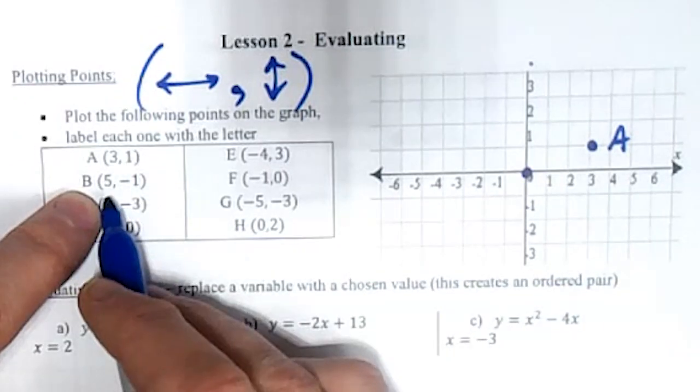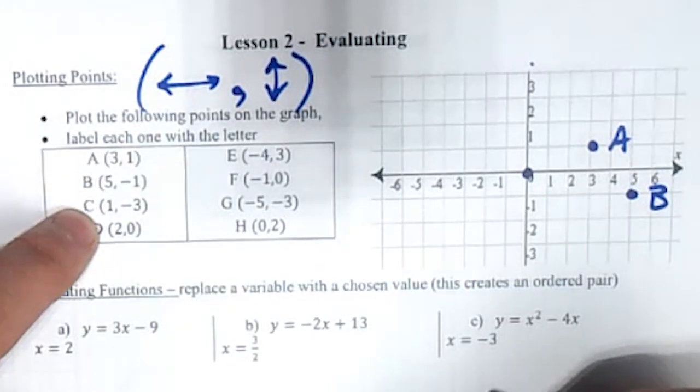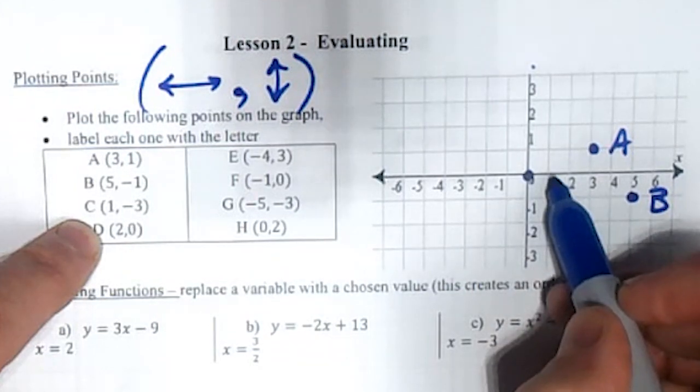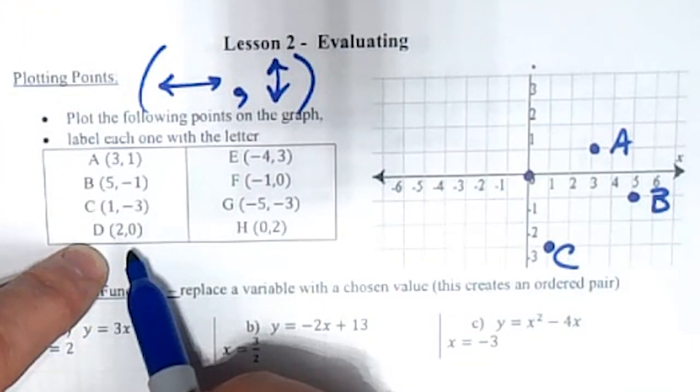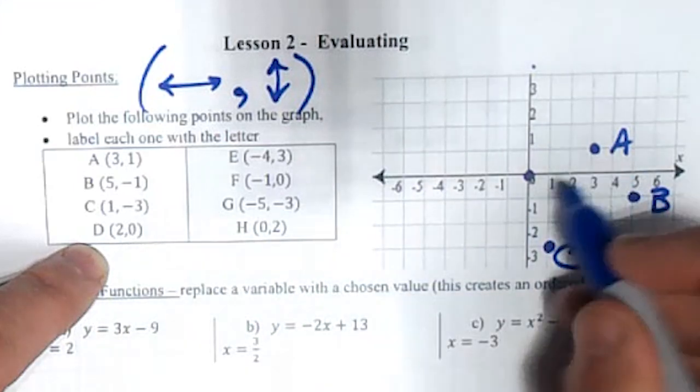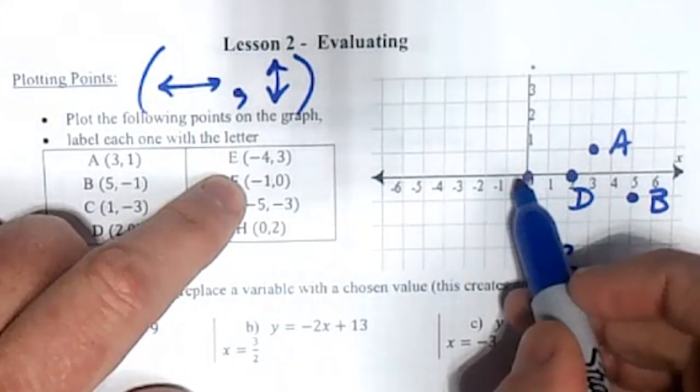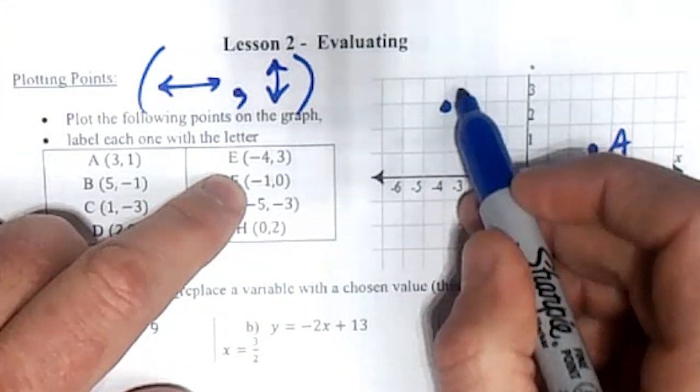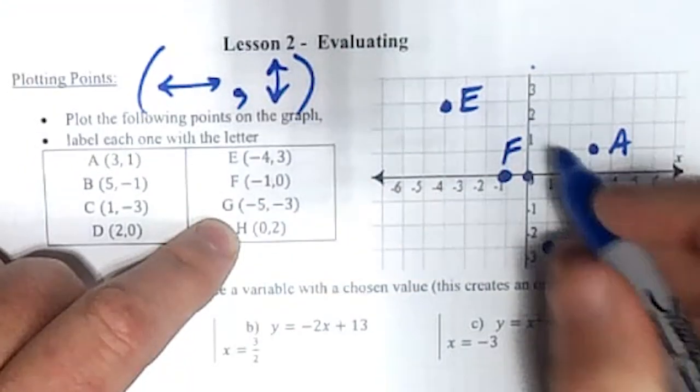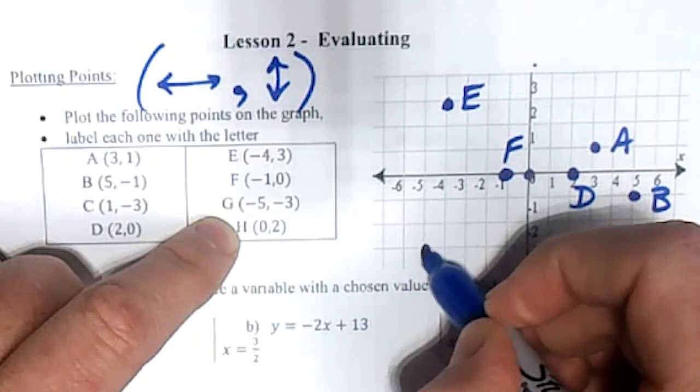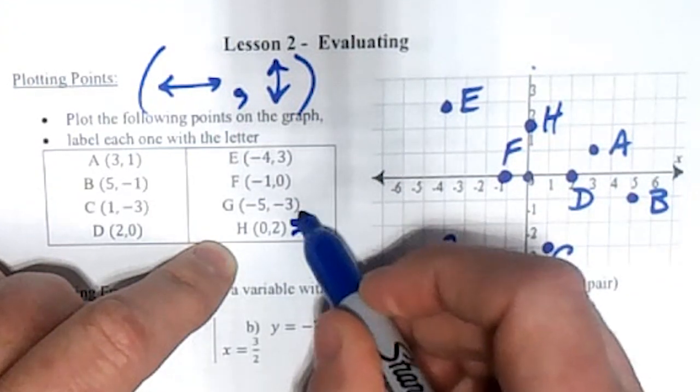So B is five negative one - five positive to the right, negative one down. C: one negative three - one positive, negative three is downwards. And D: two zero. The zeros can be tricky, so we're going sideways two, up and down zero. E: negative four three - negative four to the left, three up. F: negative one zero. G is negative five negative three. And H is zero sideways, so we just go up two. Be careful with the zeros.